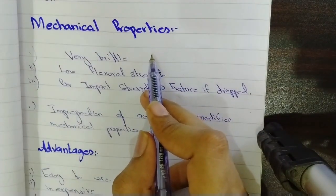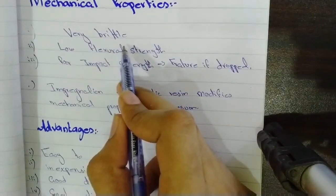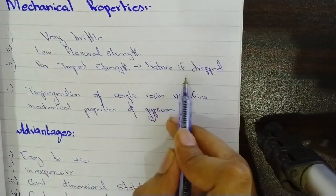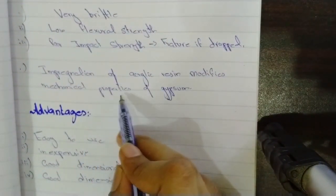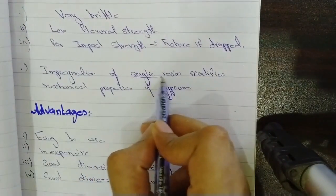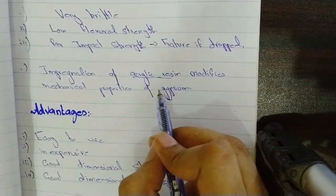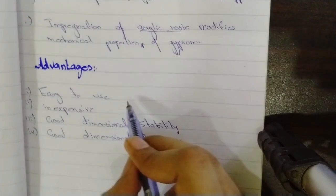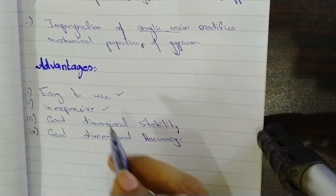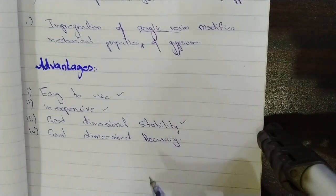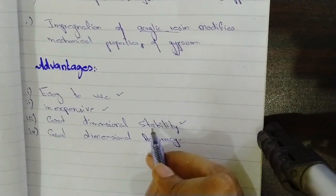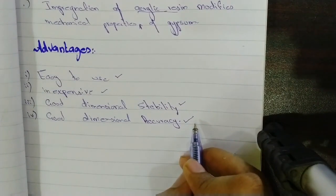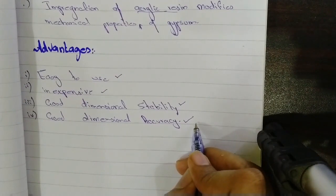Now the mechanical properties of gypsum. Gypsum as a material is very brittle. It has low flexural strength and poor impact strength — that is, it can fracture if it is dropped. Impregnation of acrylic resin modifies the mechanical properties of gypsum. If we add acrylic resin to gypsum powder and allow it to set, it will eventually have higher mechanical properties. Now the advantages: gypsum is very easy to use, it is inexpensive, it has good dimensional stability — that is, dimensional changes before and after setting are very low — and it has good dimensional accuracy. It can record the fine details of an impression pretty accurately.